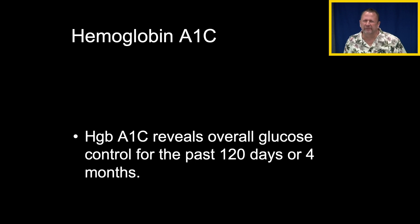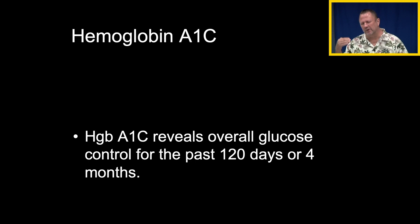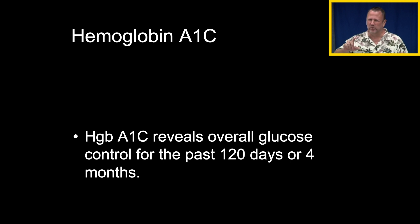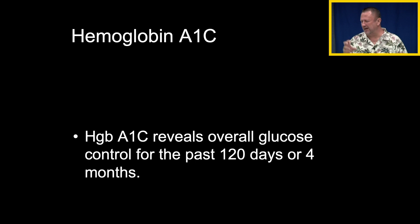Hemoglobin A1C reveals overall glucose control for the past 120 days — 4 months. A hemoglobin A1C of less than 7 is our starting target. If we can keep it at 5, that is perfect. If a diabetic is maintaining A1C levels between 5 and 6, that's very well managed. Even if they have hyperglycemic episodes, we look to hemoglobin A1C as the overall indicator of quality of glucose control.